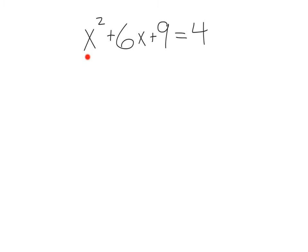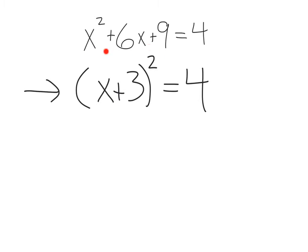Take a look at this equation: x squared plus 6x plus 9 equals 4. Now normally we'd subtract the 4, see if we could factor, quadratic formula, something like that. But in this case, if you notice that we have a perfect square, we can proceed by factoring this out, giving us x plus 3 squared equals 4.